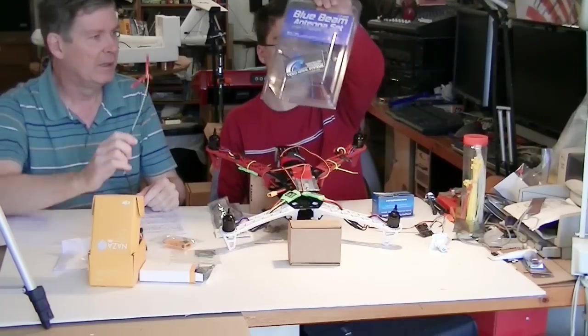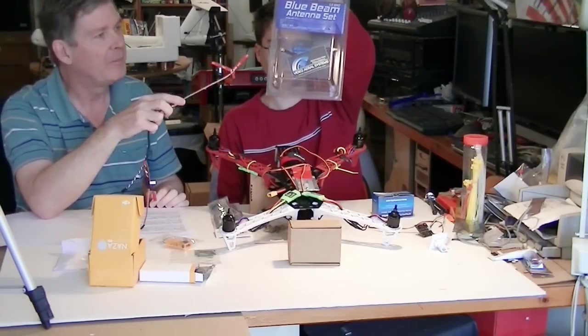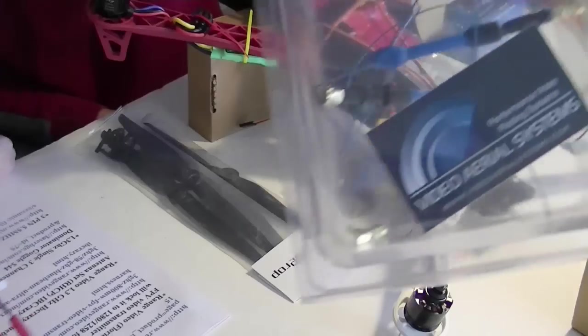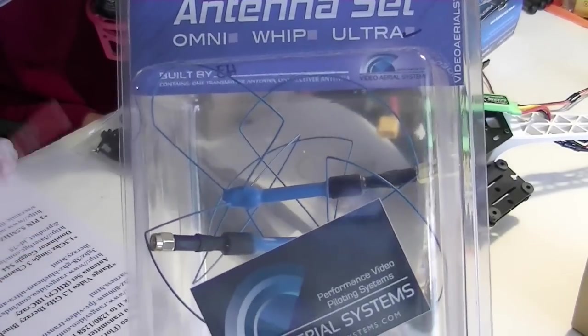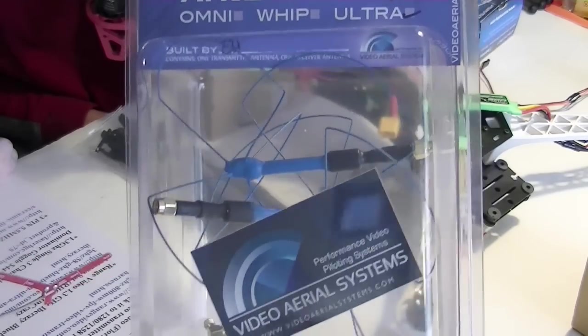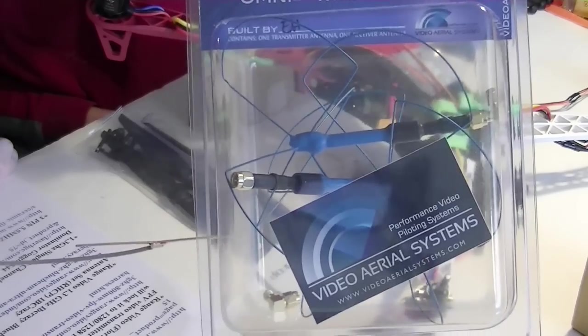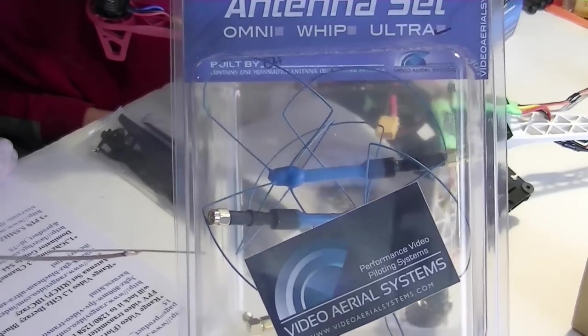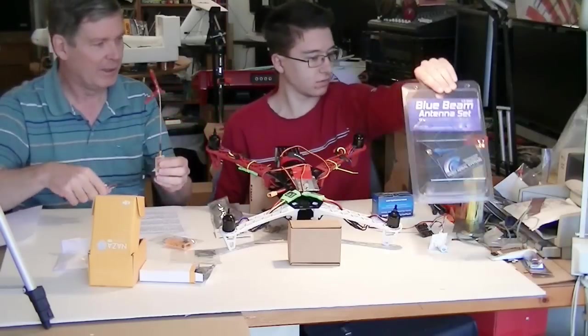Those are the Blue Beam Antennas. Blue Beams, the one I.B. Crazy talks about. And they've got the little ferrite core on it as a filter, so they're filtered on the stem. And one antenna is slightly different than the other. They come as a set, but the receiver is different than the transmitter as far as the way they're designed so it's the most effective. So we'll use those.